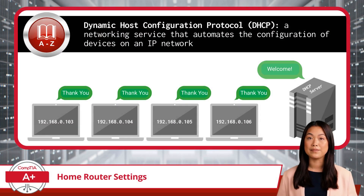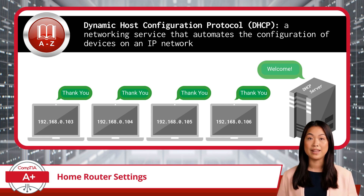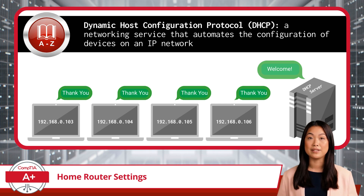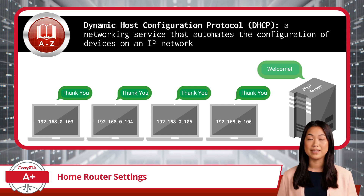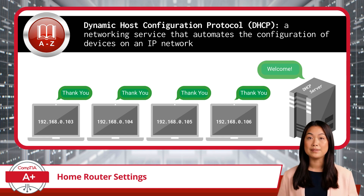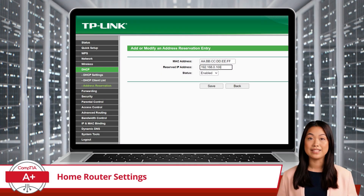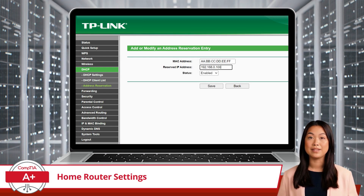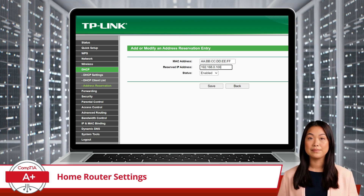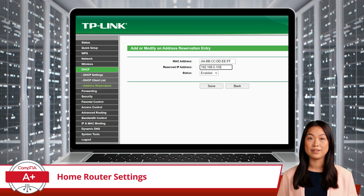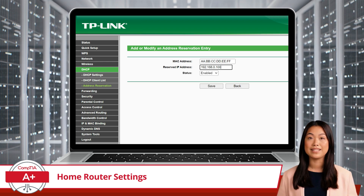On the network side, we have DHCP reservations. DHCP, or Dynamic Host Configuration Protocol, is a networking service that automates the configuration of devices on an IP network. Think of it as your network's personal valet service — every time a device joins the network, DHCP hands it an IP address from a reserved pool. Sometimes you may want a specific device, like your printer or a server, to always have the same IP address. By using a device's unique MAC address, you can reserve a specific IP address for that device, ensuring it gets the same address every time it connects.